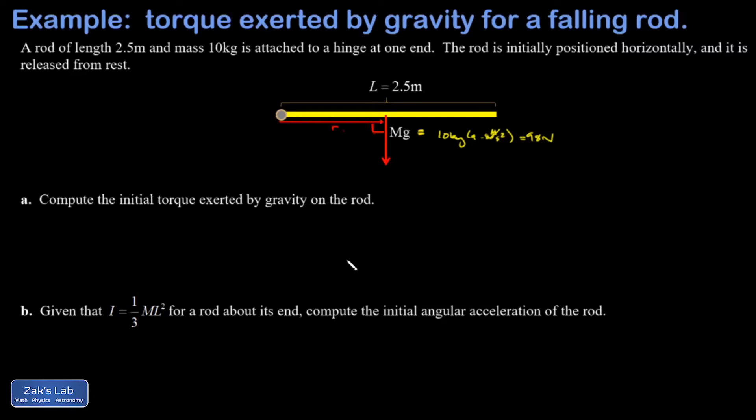The initial torque exerted by gravity on the rod: I have 98 newtons, already perpendicular to a lever arm whose length is 1.25 meters. Keeping three significant digits, I get 123 newton meters.